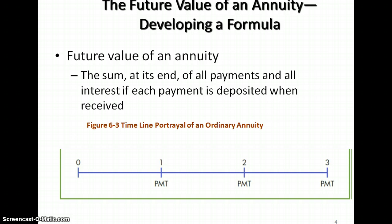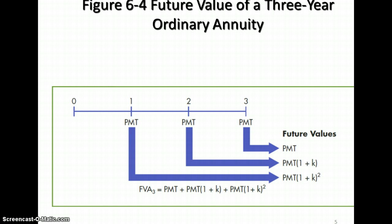The future value of an annuity is what we want to focus on here. The future value of an annuity is the sum of all of the payments in relationship to when the payment is received. Here is a timeline of a three-year or three-payment annuity. We're going to make a payment at the end of year one, end of year two, end of year three. The concept is that the first payment is going to grow over three years, the second payment is going to grow over two years, and the third payment isn't going to grow at all because it's made at the end of the third period.